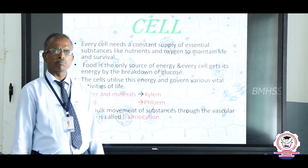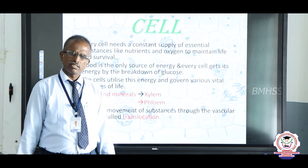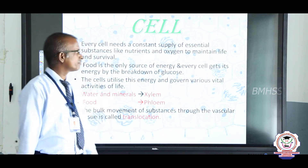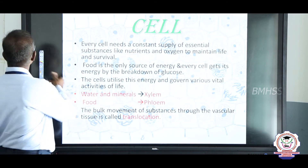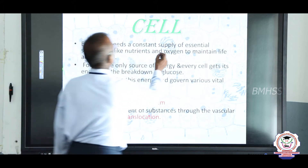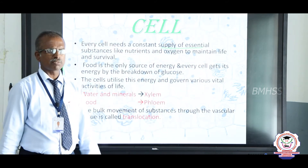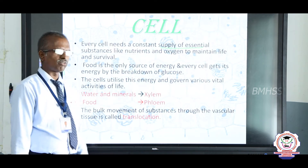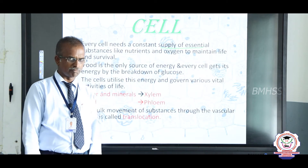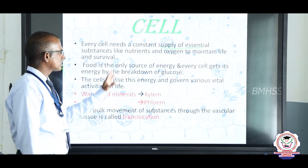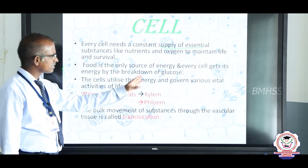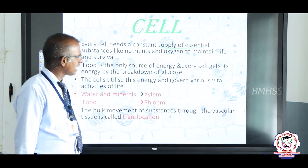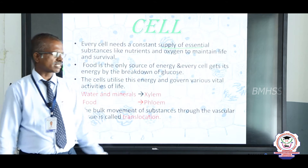All multicellular organisms have bodies made up of many millions of cells. In this case, we need to carry substances such as energy. That energy comes from food material. Every cell needs a constant supply of energy. Food substances are mainly oxidized, broken down, and energy is released. That energy is needed to maintain the life and survival of the living being. Glucose is broken down and energy is released for various vital activities.